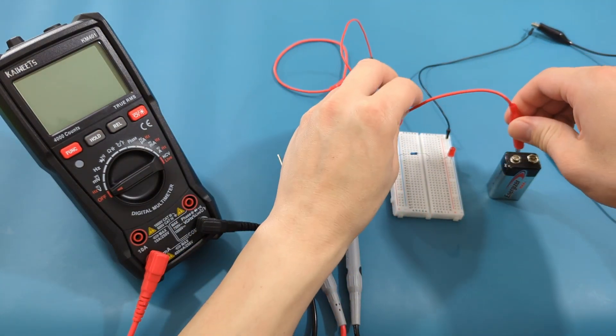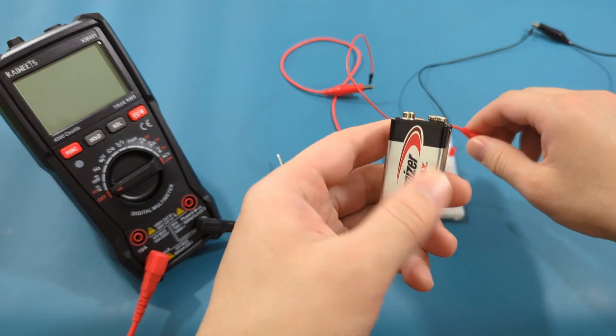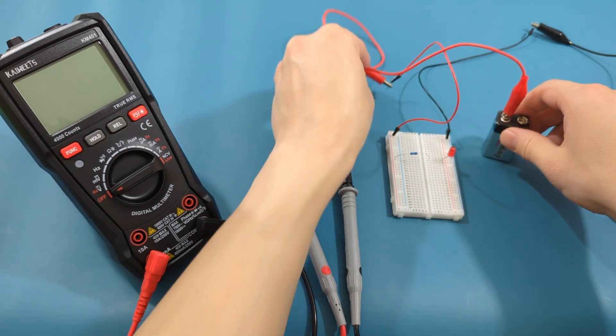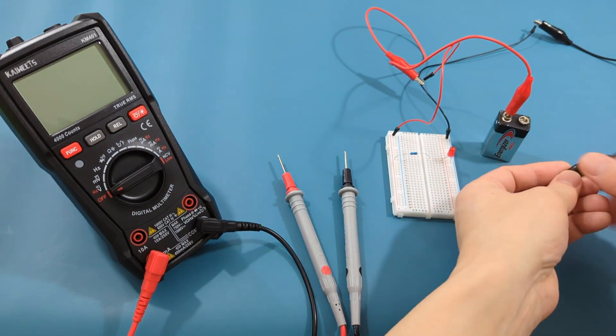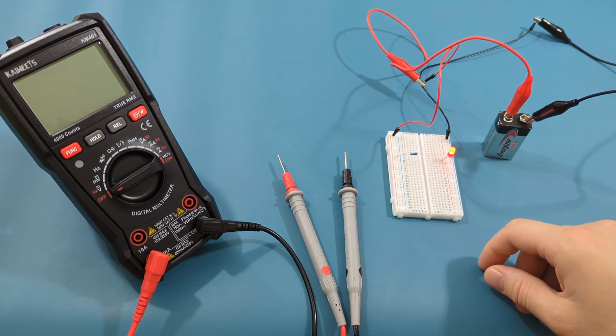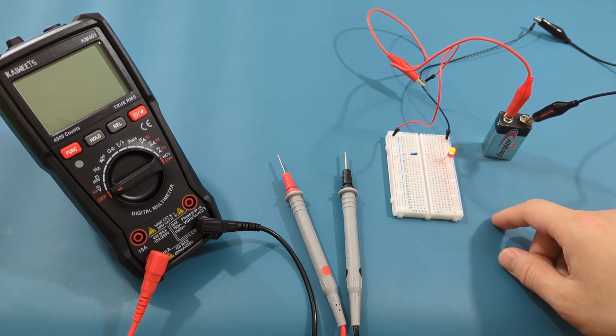Connect the other end of the red alligator clip to the positive terminal of the 9V battery. Connect the other end of the black alligator clip to the negative terminal of the battery. You should see the LED diode light up. This is good.